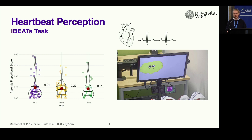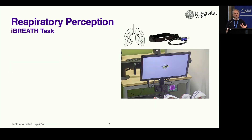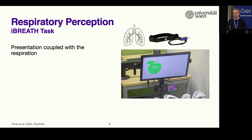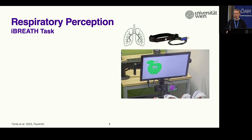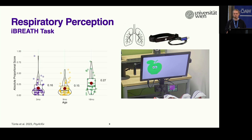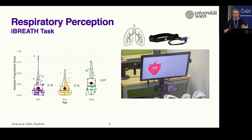There's a world beyond the heartbeat — there are also other interoceptive modalities that might be interesting. Next we wanted to ask: can we use this idea to investigate infants' respiratory perception? So we created the Eye Breath task following the same logic. The presentation is always coupled with the respiration of the infant using a respiratory belt, and it can either be synchronous or asynchronous, again using gaze-contingent presentation. What we find here is actually a bit different. At three and nine months, scores are lower, and then towards 18 months they increase. So there might be some development going on between nine and 18 months in respiratory perception, which might make sense since in this age range motor development is very important — they move more, and that might be coupled to respiration.